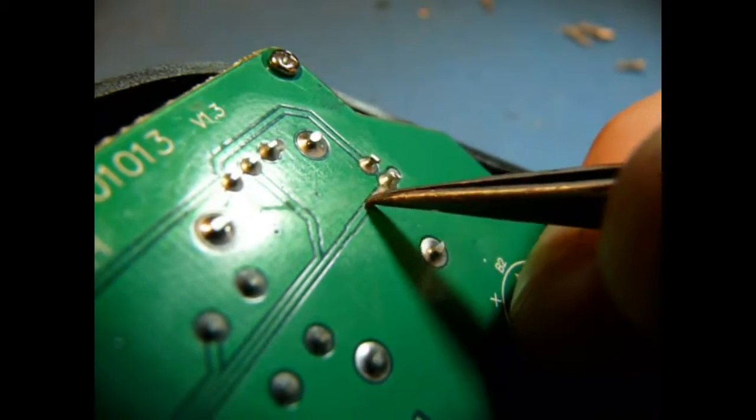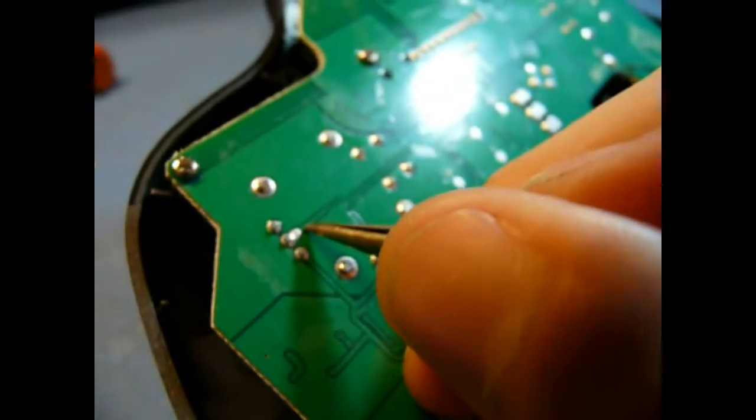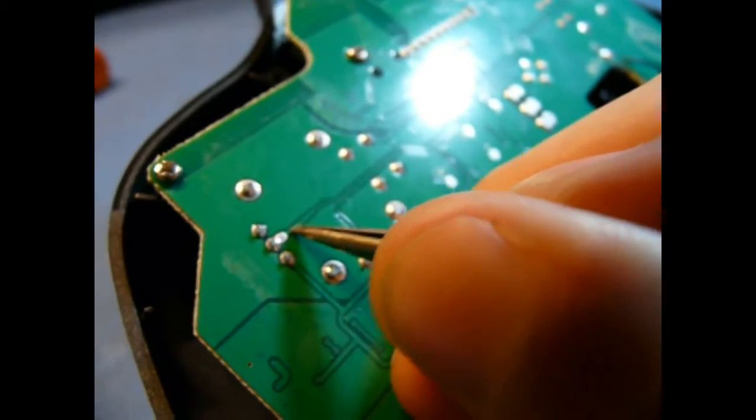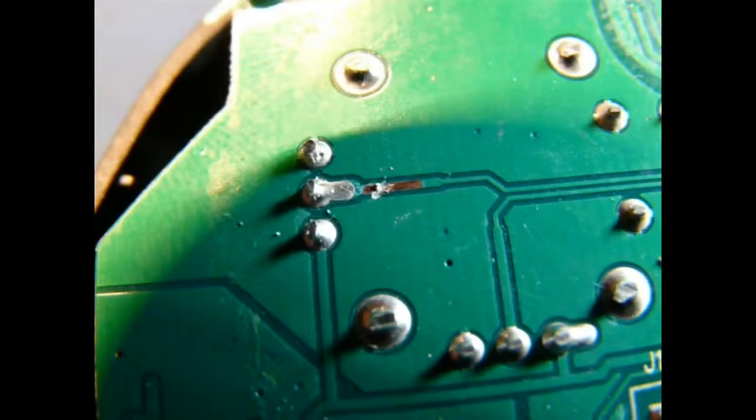So the next step is going to be to cut some traces. So first thing, take some metal object and scrape away the solder resist in these locations. These traces are carrying the signal. Then cut the trace there and there.